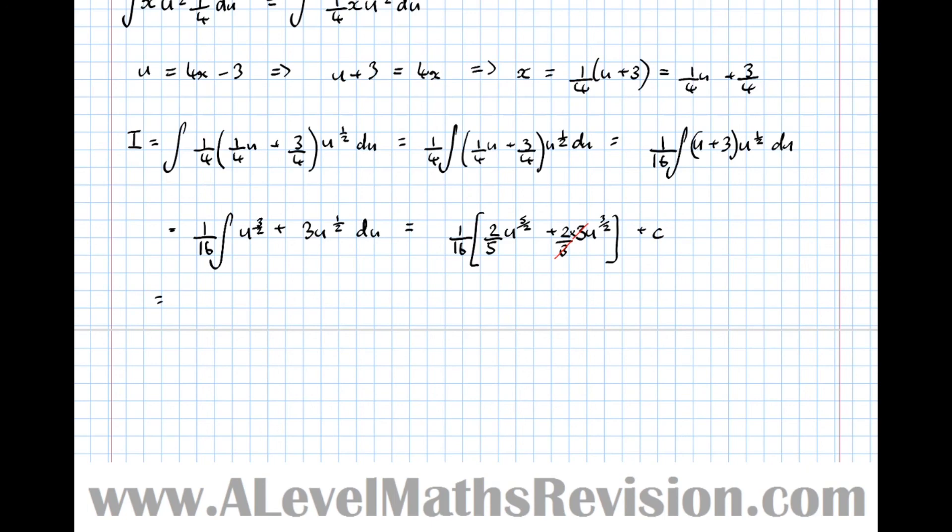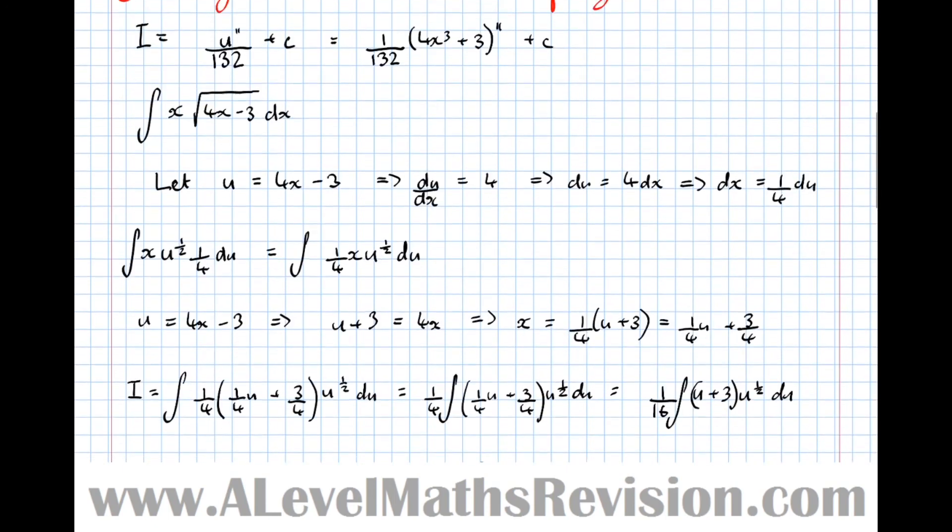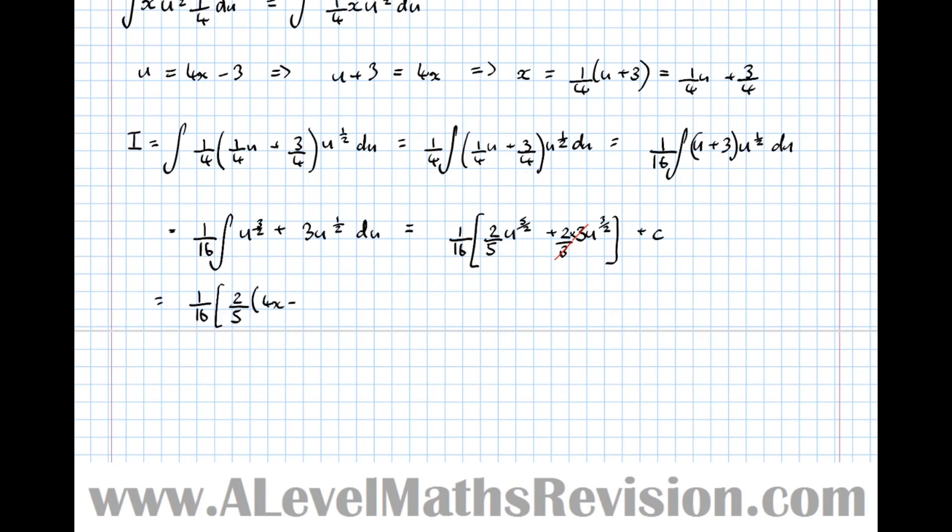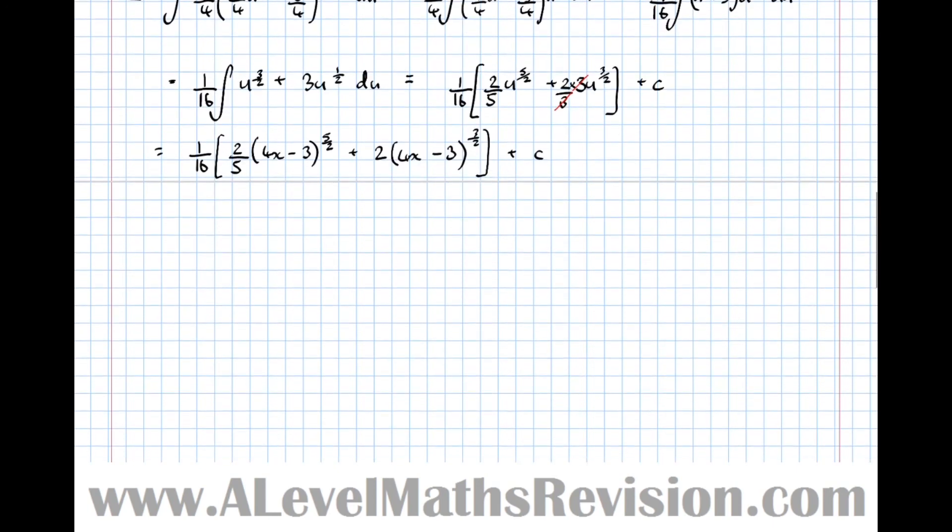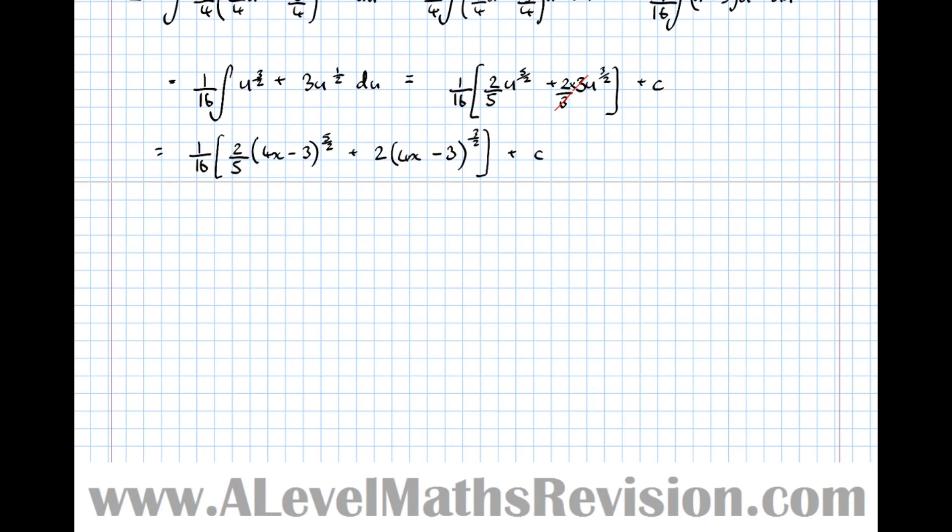And let's write it now in terms of the original variable. So equals, we've got a 16th, 2 fifths, and our substitution was 4x minus 3, so 4x minus 3 to the 5 over 2, plus 2 times 4x minus 3 to the 3 over 2, plus c. And if we multiply these out now, we get 2 eighths, which is a 40th, so a 16th times 2 fifths is 2 eighths or 1 40th, 4x minus 3 to the 5 over 2, plus 2 16ths is 1 eighth, 4x minus 3 to the 3 over 2, plus c.